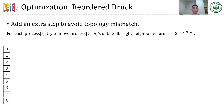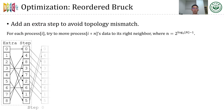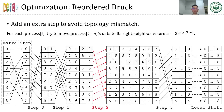The fourth optimization is reordered Bruck, which can also be used to avoid topology mismatch. An extra step is added compared to the standard Bruck algorithm. For each process storing the i-th block of data, we try to move the second-last block of data to its right neighbor. In this way, in the last several steps that transfer the most total data, each process only needs to send data to its neighbor instead of a far-away process.